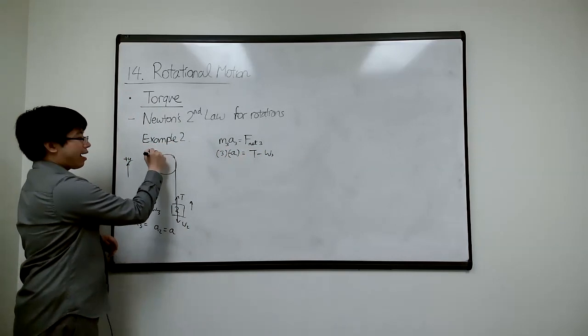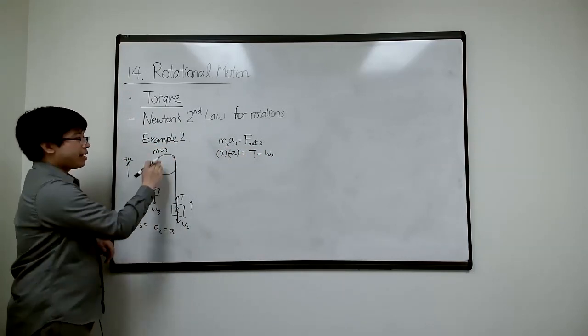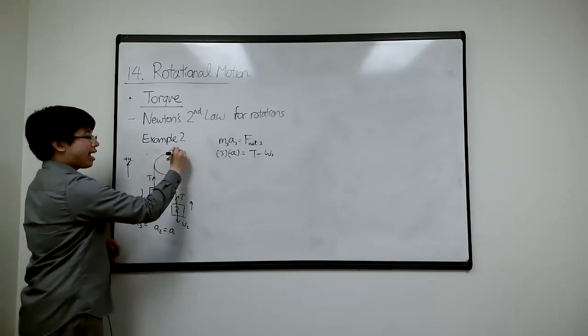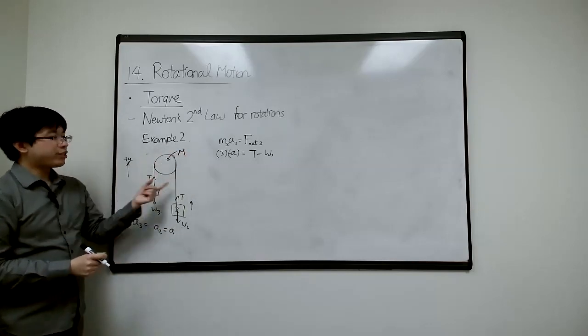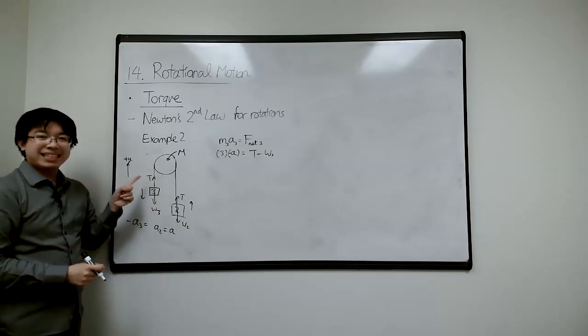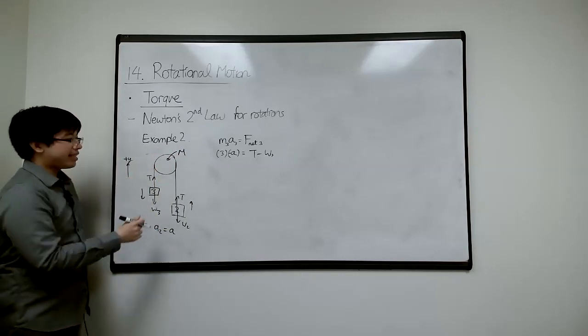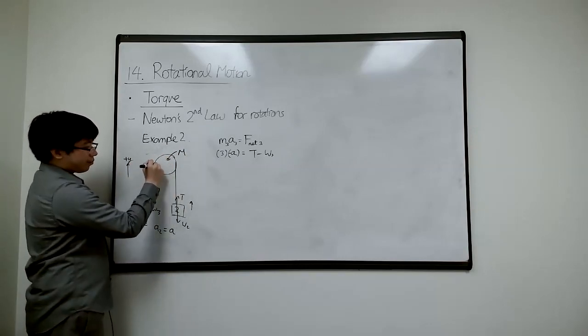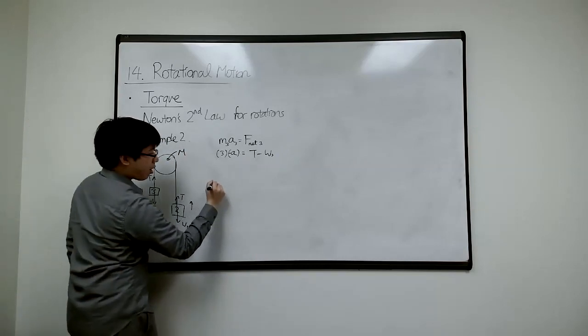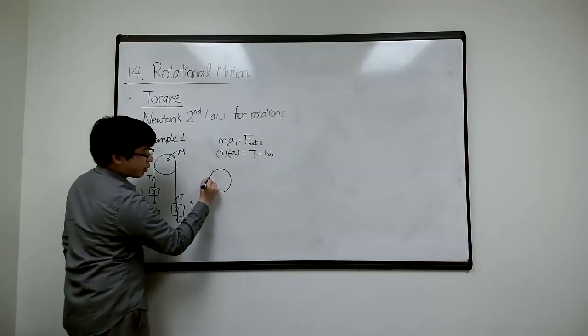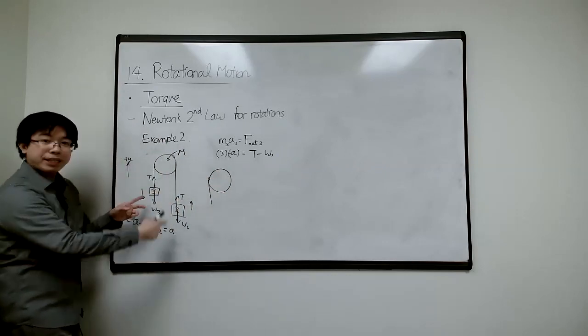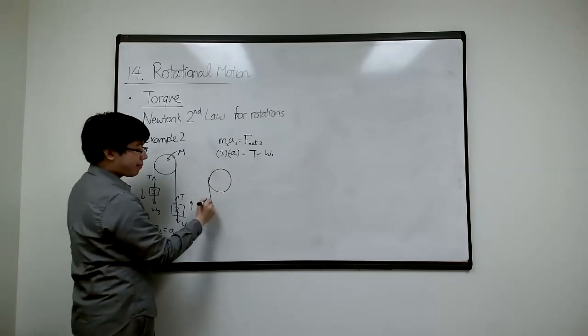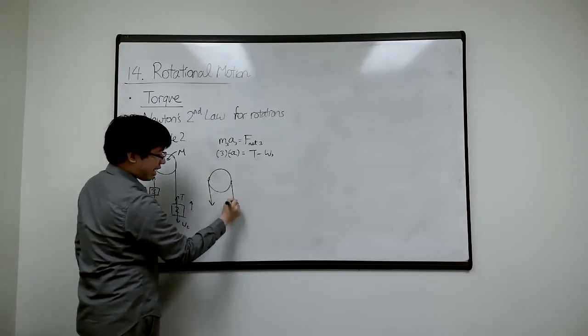But what we've neglected is we said it's a massless pulley. But what if this is not massless? What if this guy has a mass M? Now it takes a certain amount of torque to rotate this as well. Let's draw the free body diagram of this guy. This guy needs to be anchored somewhere. For the free body diagram of the pulley, these guys move in one dimension linearly, but this guy rotates.